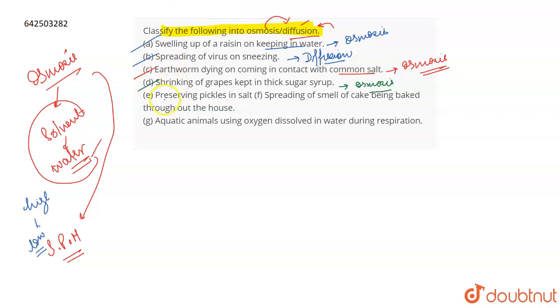Talking about the other one which is preserving pickles in salt. Now preserving pickles in salt is an example of osmosis. E is an example of osmosis only because again the same reason.